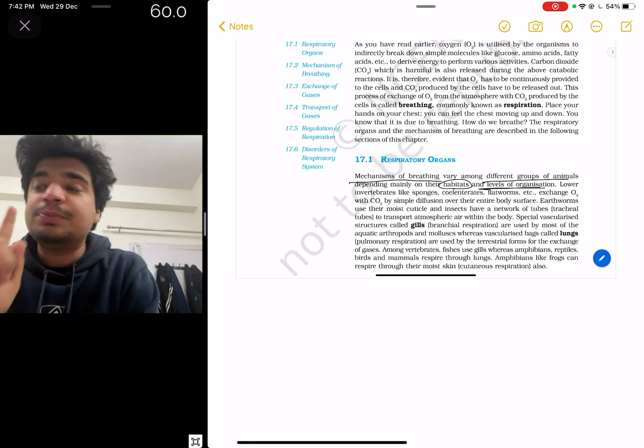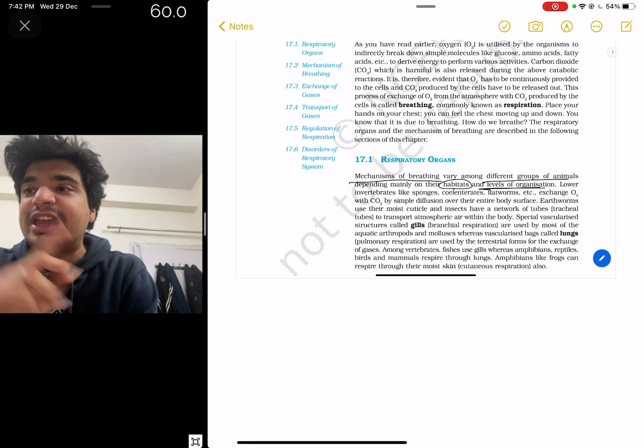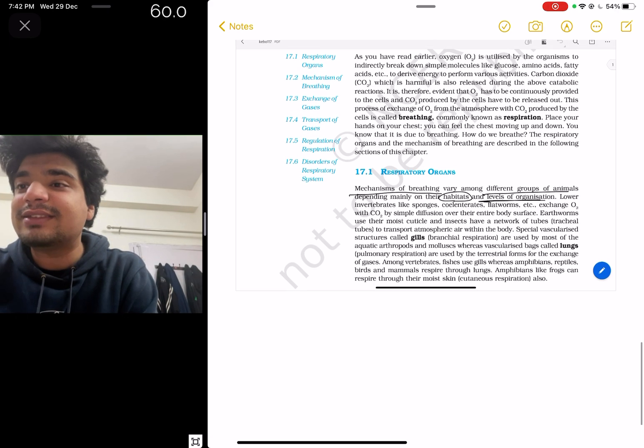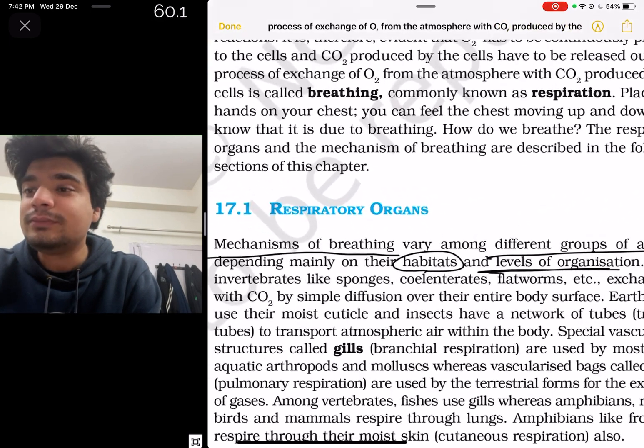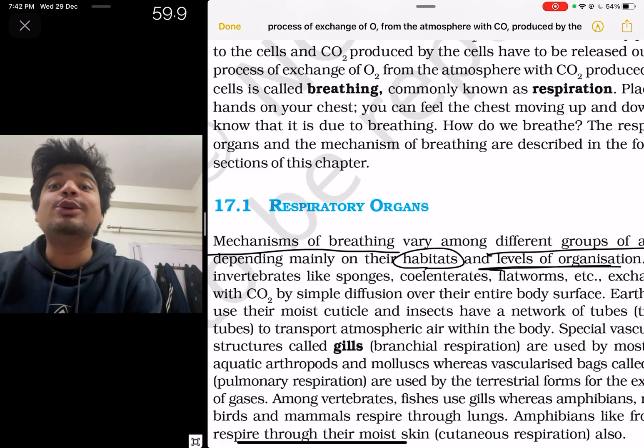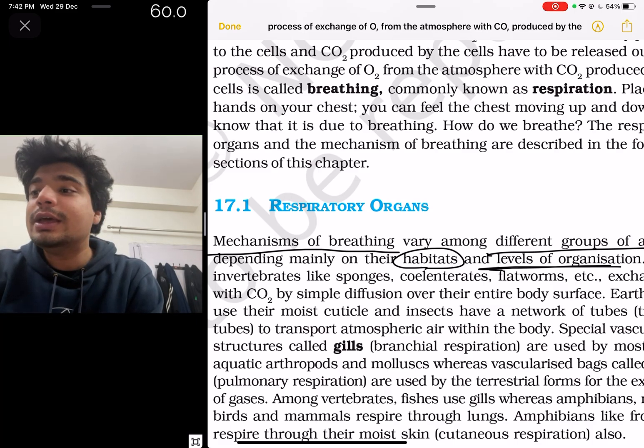Lower invertebrates like sponges, coelenterates, flatworms exchange oxygen with carbon dioxide with simple diffusion over their entire body surface. So what are the lower organisms using? The entire body surface.